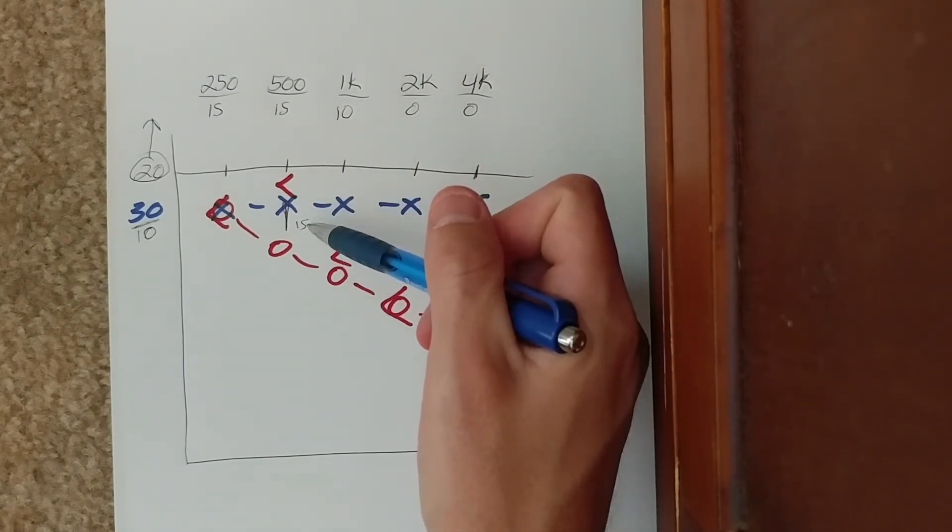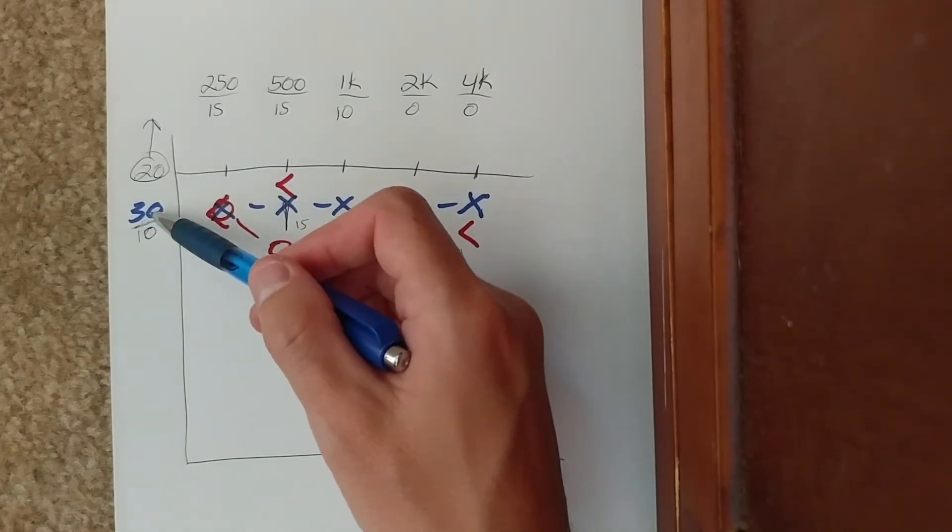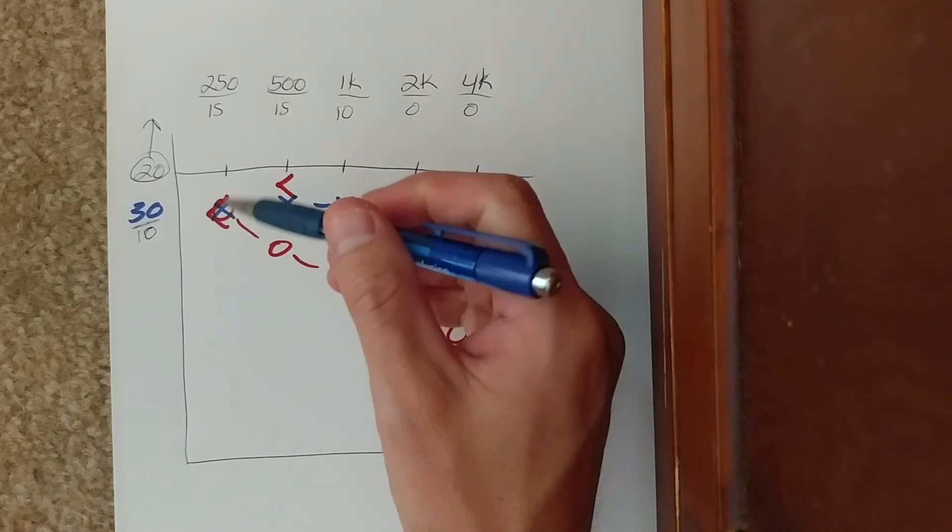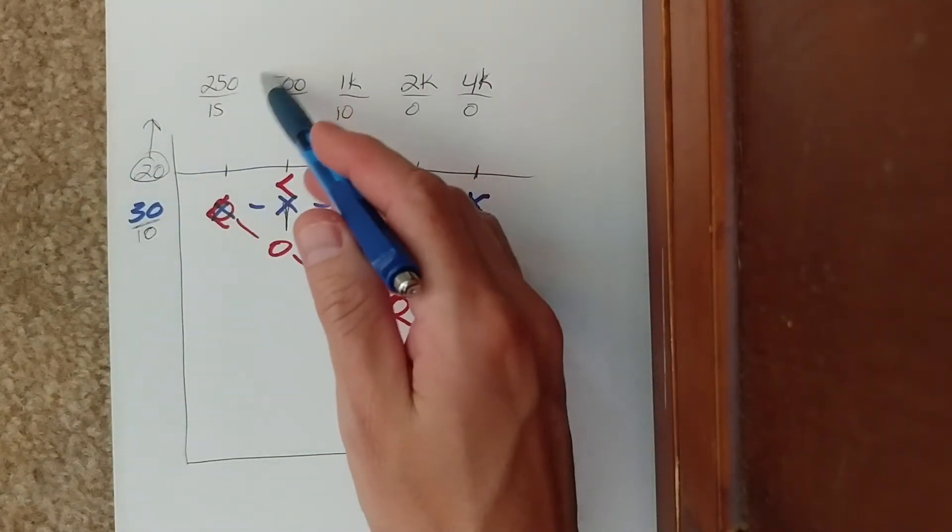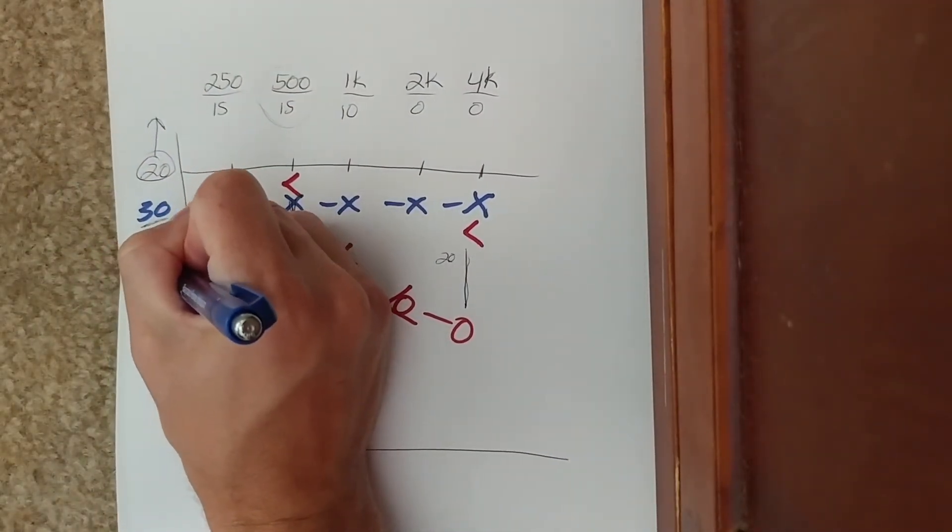I'm going to mask at 30 decibels in my non-test ear which is my left, and I'm going to add 10 no matter what. I go over to my occlusion effect chart and see that I also have to add 15, which will bring me to 55. So I'm going to start with presenting 55 decibels into the left ear to mask.